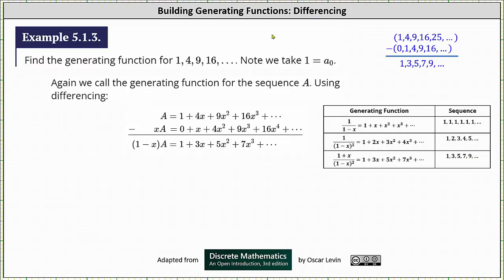The next step is to write the generating series for the given sequence as an equation. We write: a equals 1 plus 4x plus 9x squared plus 16x cubed plus ... This is the generating series for the given sequence.